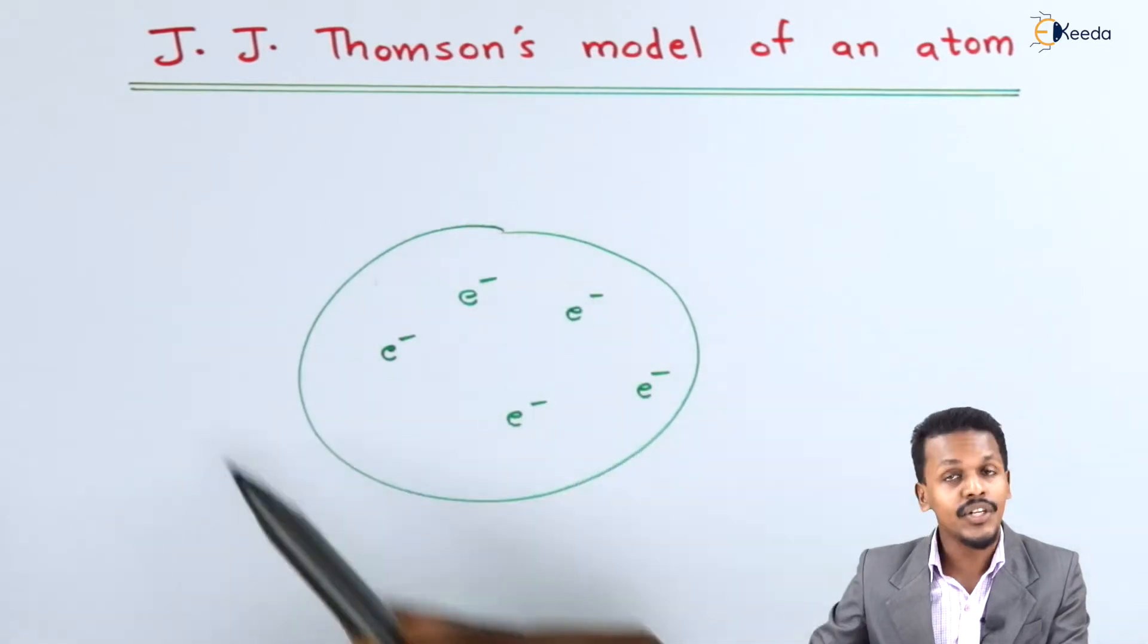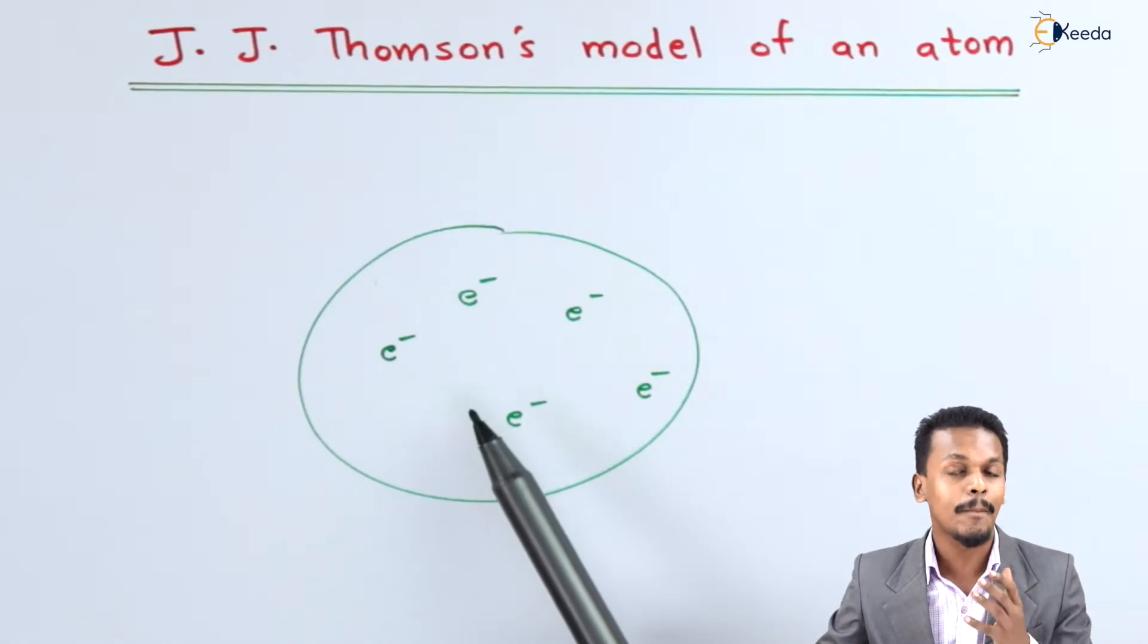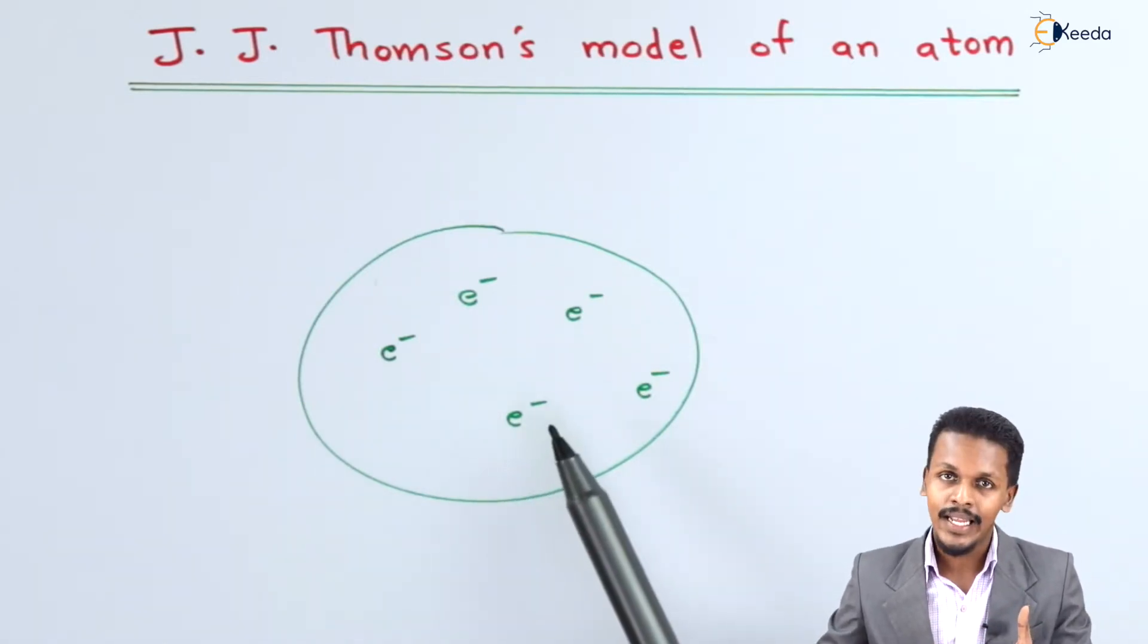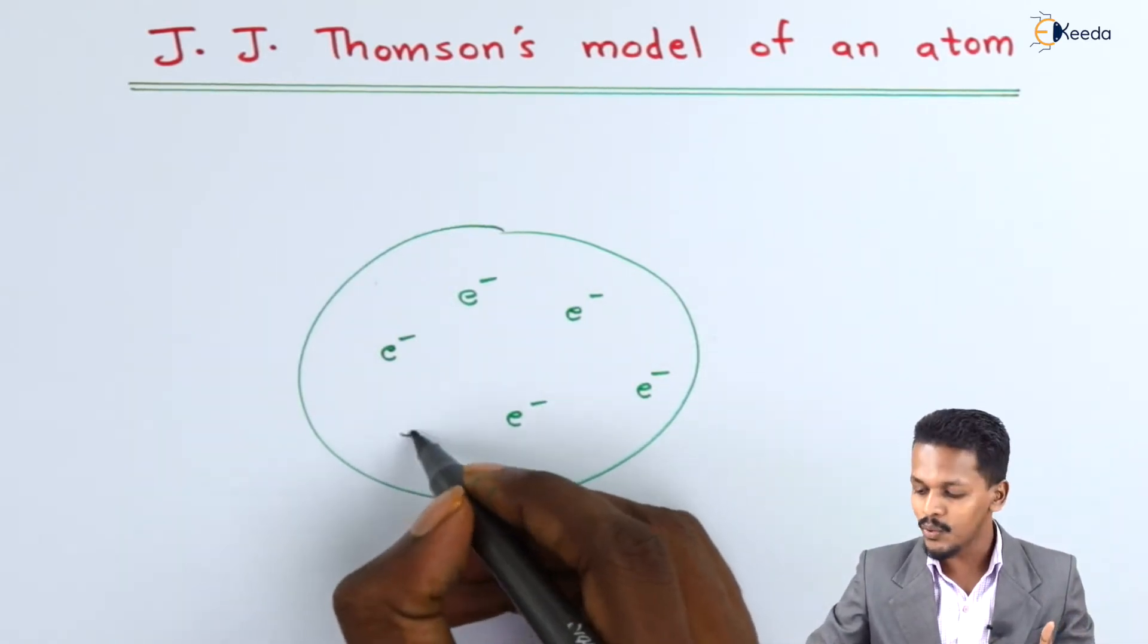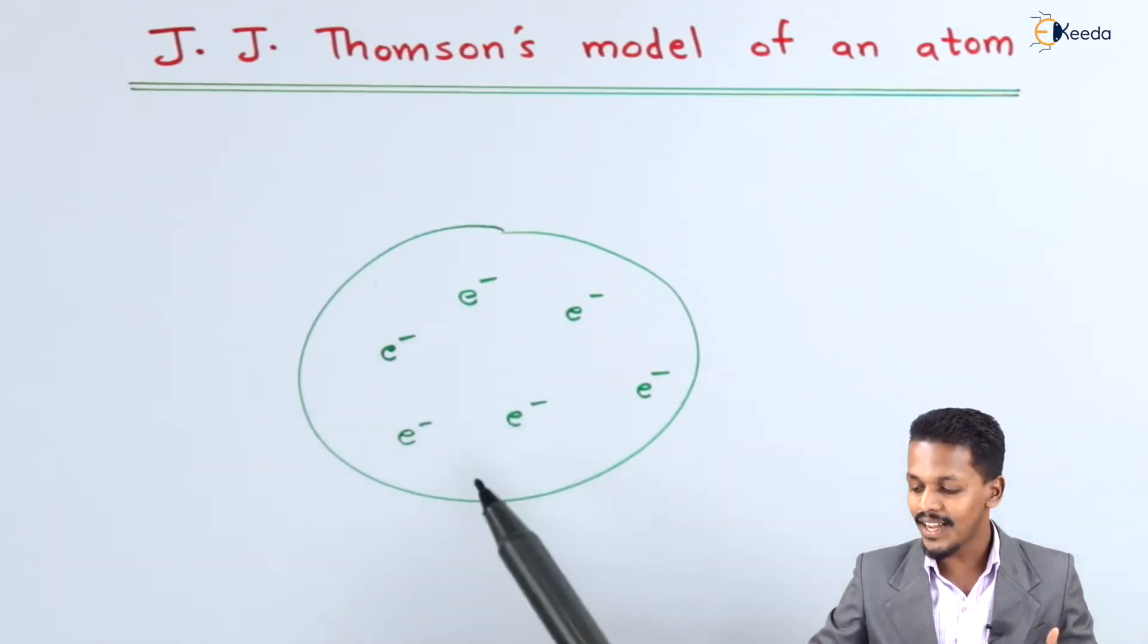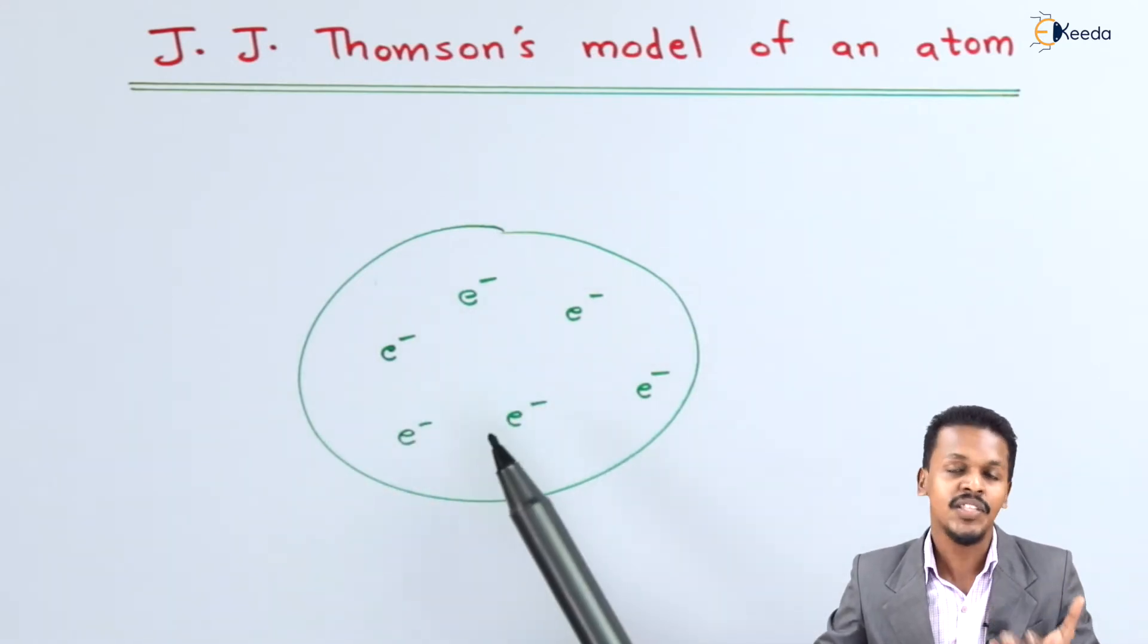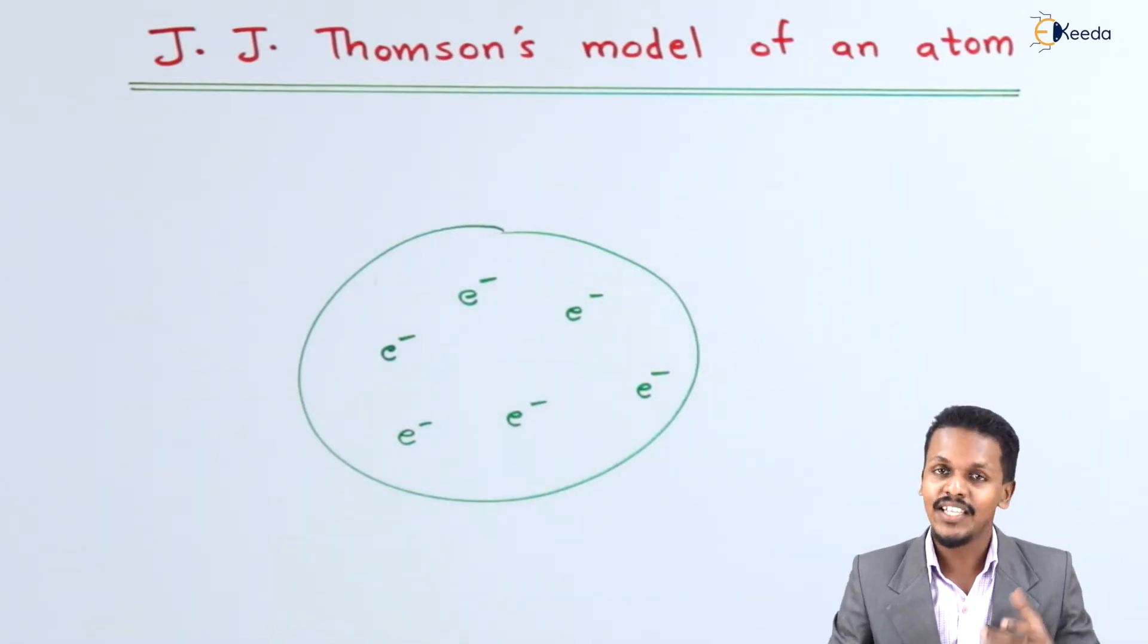This structure is spongy and has a radius of 10 to the power minus 10 meters, but there are certain drawbacks. Thompson proposed the name 'plum pudding model' because the electrons are not arranged in a regular pattern - they are randomly arranged, similar to a plum pudding.